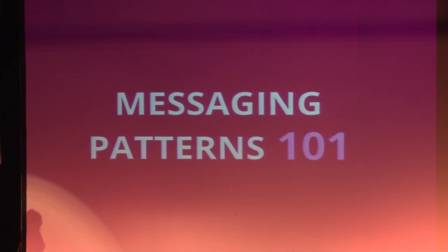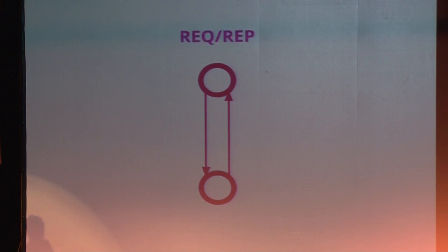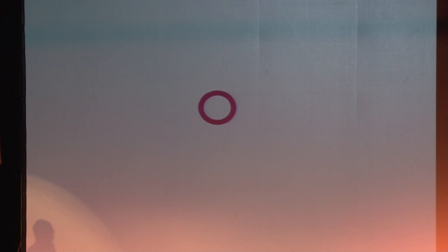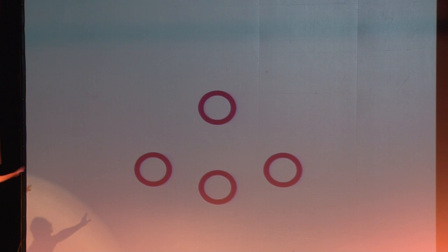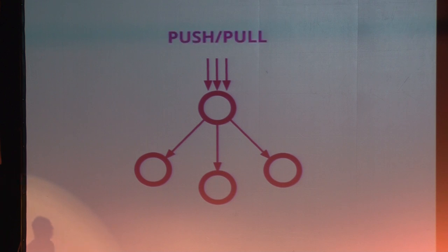I'm going to go over messaging patterns 101. We have two processes — you can think of these as processes or as different machines. A message comes from one process to the other and it waits to get a message back. We call this request-reply, and this is a lot like HTTP but without the headers. Now let's say we have a process and we want to distribute messages one at a time to worker processes. A message comes in, it passes it off; the next message comes in, it passes it to the next node. We call this push-pull.